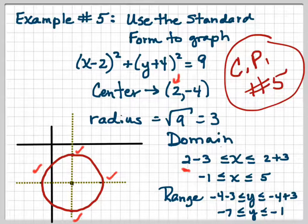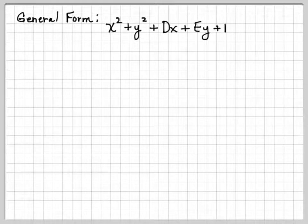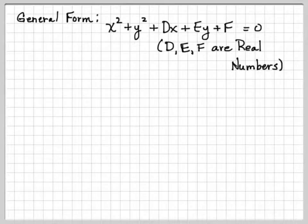So do your checkpoint number 5. And here we are back. The general form, x squared plus y squared plus dx plus ey plus f equals 0, where d, e, and f are real numbers. Now this kind of equation is going to pop up again for an ellipse and for a parabola and for a hyperbola, for all the conic sections.